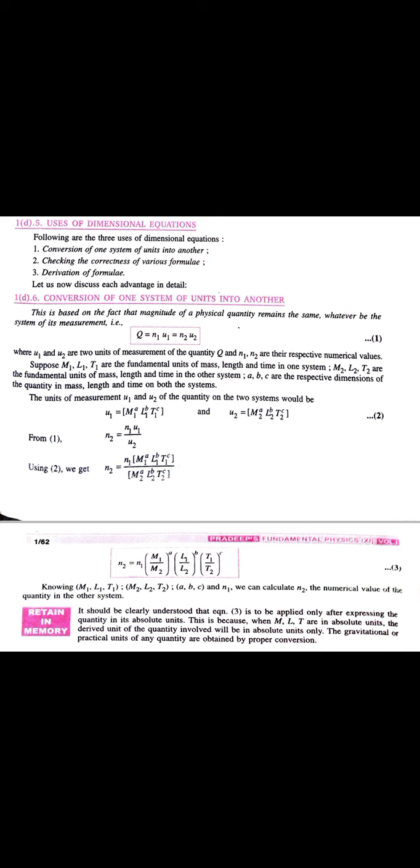So we can write N2 is equals to N1. U1 ki jagah U1, upar wali equation 2 se value rakhtayenge, U2 ki jagah bhi equation 2 se value put up kartayenge. So, N2 is equals to N1, M1 is to power A, L1 is to power B, T1 is to power C. We can write this equation as N2 is equals to N1, M1 by M2 is to power A, L1 by L2 is to power B, T1 by T2 is to power C.